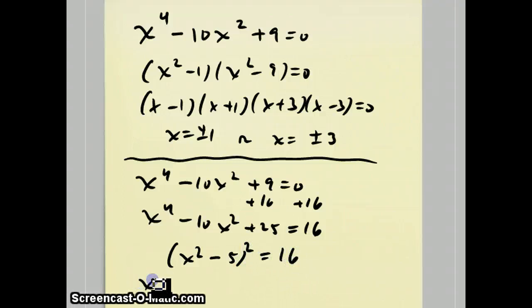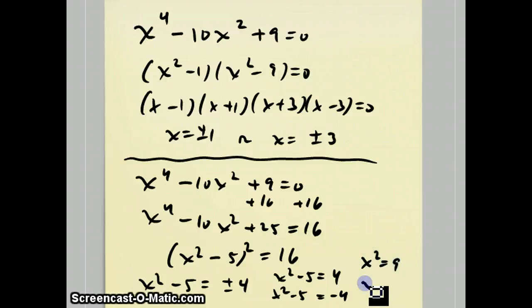Now you can take the square root of both sides and get x^2 - 5 = ±4. That leads us to two equations: x^2 - 5 = 4 or x^2 - 5 = -4. You end up with x^2 = 9 or x^2 = 1, which leads us back to the same answer as before. But I just want you to keep that in mind as a strategy for dealing with quartic equations.